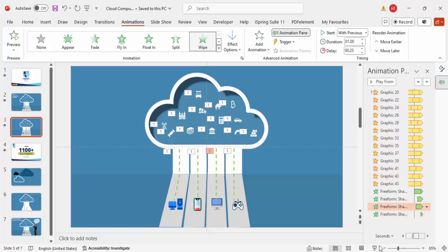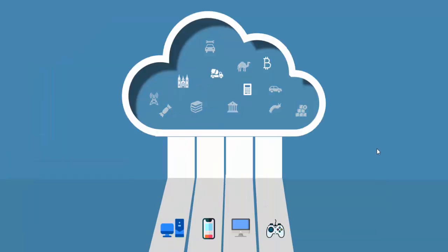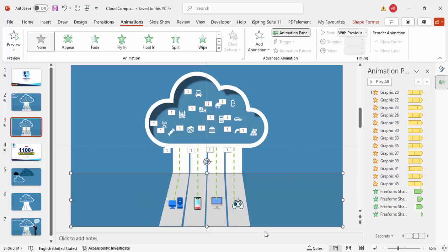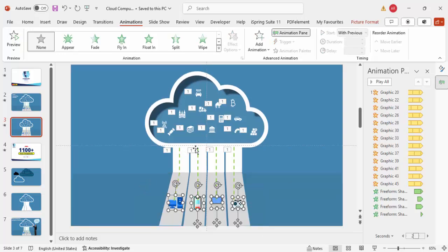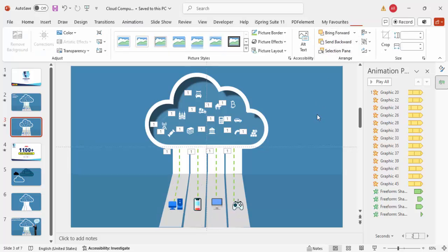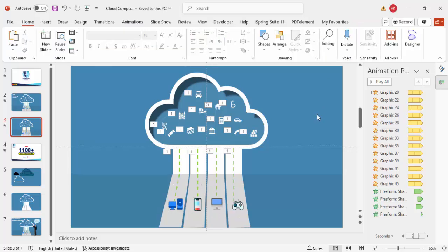Once you click, the animation starts and it looks as if information is coming from the cloud and reaching your devices. Make sure the device icons are always on top by using Bring to Front. Your design is ready, and if you'd like to add text you can do that as well.